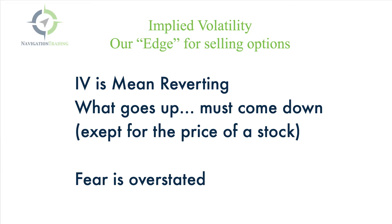Implied volatility does this due to the fear that comes in and out of the marketplace. If there is fear or uncertainty, implied volatility goes up. If things are calm and certain, implied volatility goes down. The fact is, with trading options and a lot of other things in life, fear is almost always overstated. So when fear or uncertainty comes into the marketplace, implied volatility goes up, the options get more expensive, and this is when we like to come in and place trades to take advantage of that overstated fear — that high implied volatility — and sell options when they're more expensive.